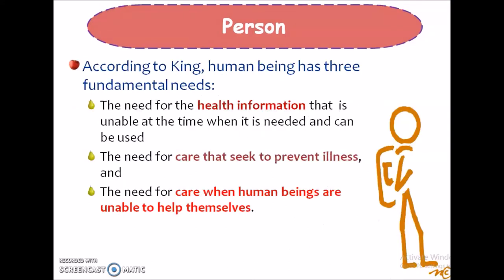According to King, there are mainly three fundamental needs in a human being. The first is the need for health information. The second is the need for health care that seeks to prevent illness. And the last one is the need for care when human beings are unable to help themselves.